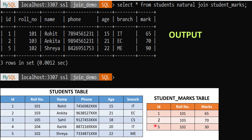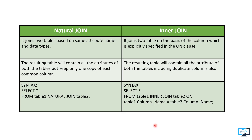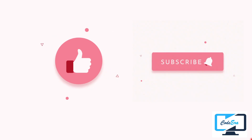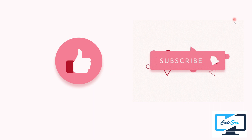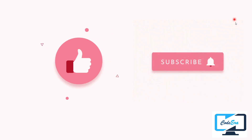Here are some differences between natural join and inner join: natural join compares tables on the basis of attribute names and data types, but inner join uses the ON clause to specify the comparison condition. In natural join, only one column appears for the common field, while in inner join there are two columns for common fields. I hope this video was helpful - please hit the like button and subscribe to my channel. Thank you for watching!